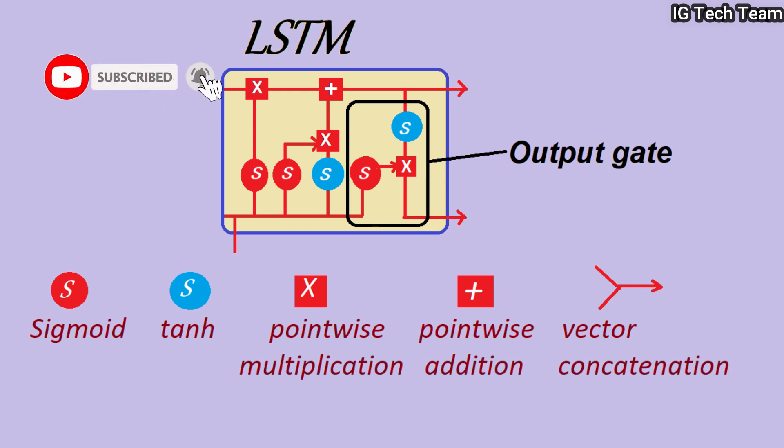Next we have the output gate, which decides what the next hidden state should be. You know the function of each operation that are included in this output gate. That means we are keeping the important information for the long run and forgetting the useless information. We are adding that important information, and finally we have to pass this to the next layer. This is how the LSTM model works.